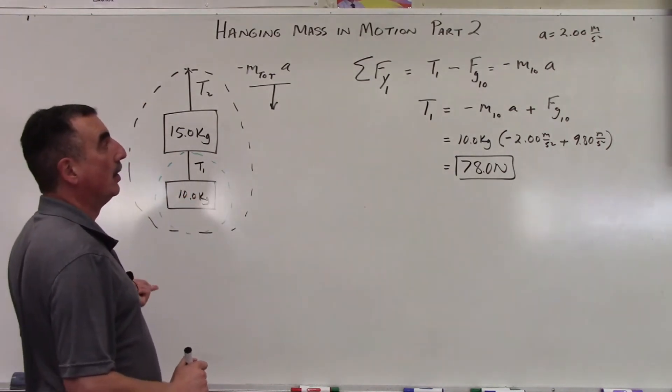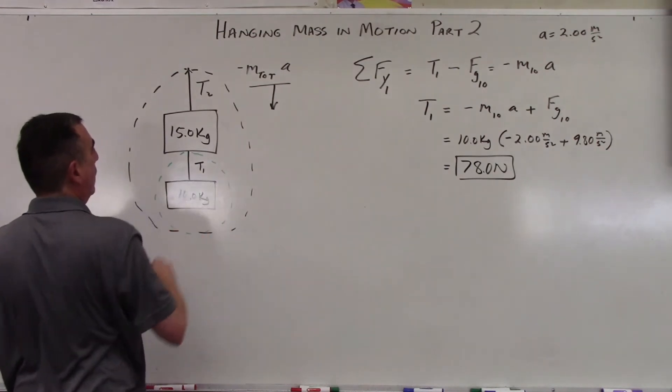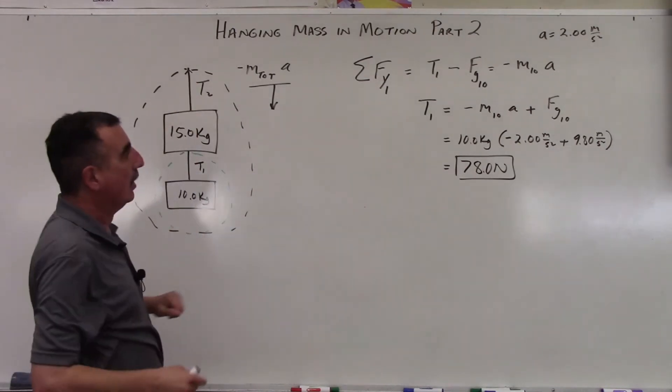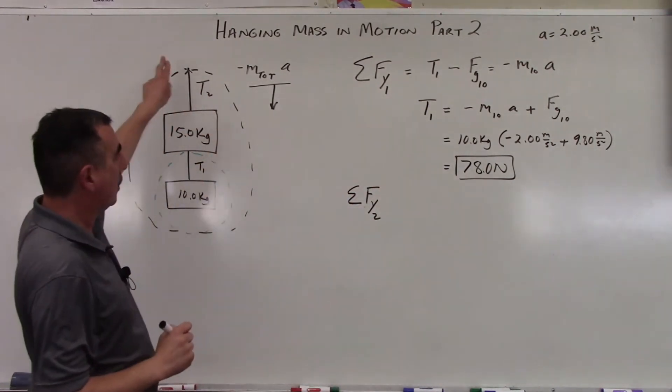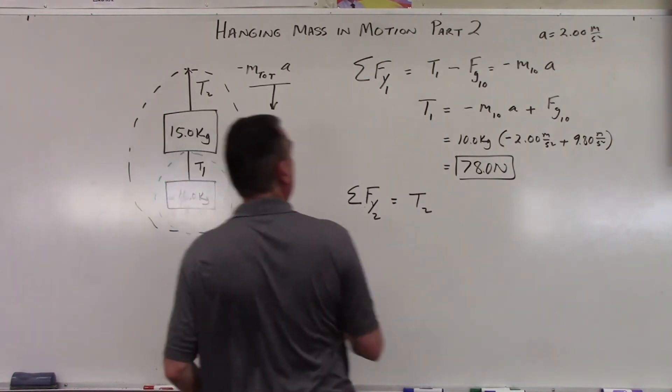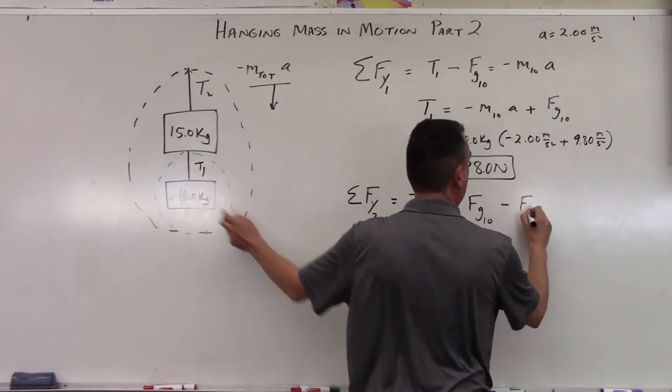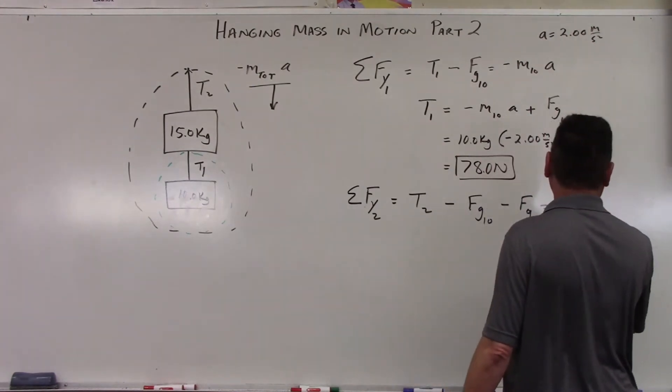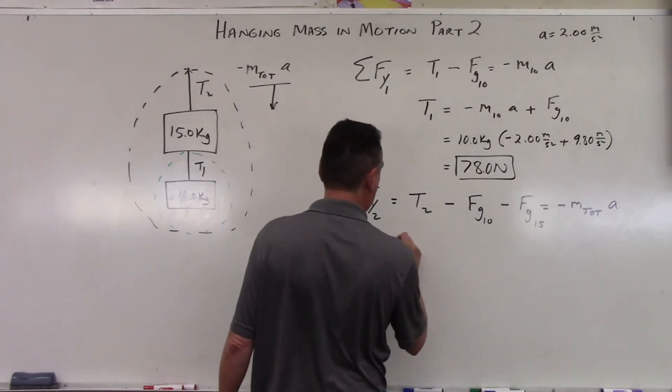Now, let's find the tension on two. So in this case, what we'll do is we're going to look at this whole system. What's nice about this, the tension on one actually disappears. And so we're just looking at this system. So this will be the sum of the y for 2 for the whole system. It's going to be equal to T2. This guy zeroes itself out. It's gone. Minus. Now we have F sub G 10 minus F sub G 15.